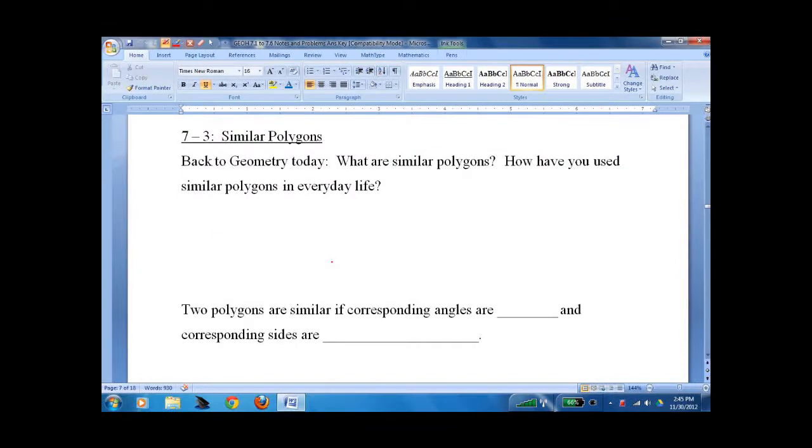Similar polygons. Back to geometry today—we've been doing a lot of ratios and proportions. Let's see why. What are similar polygons? Well, they're polygons that get blown up, somebody put them through a two-time multiplier, or the other way, they put them through a one-half multiplier, or times three or times 700 or whatever.